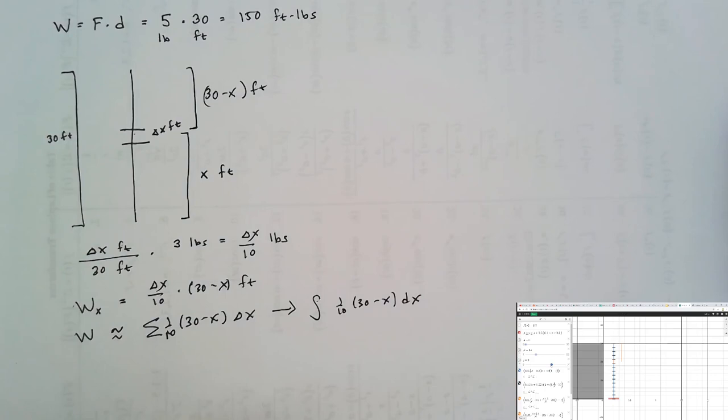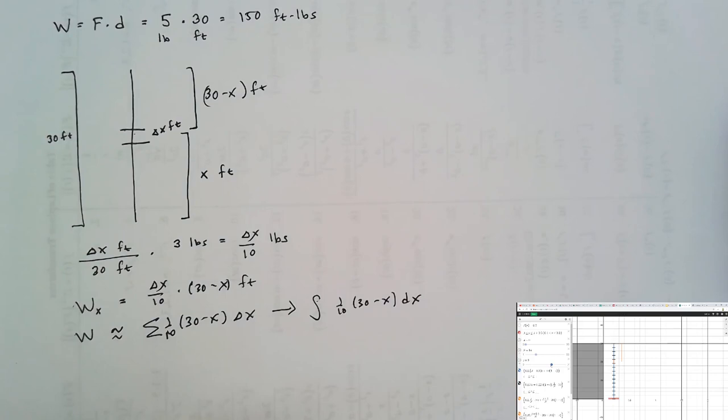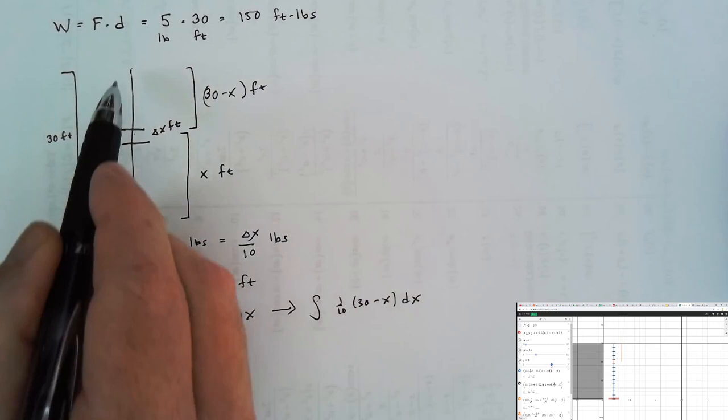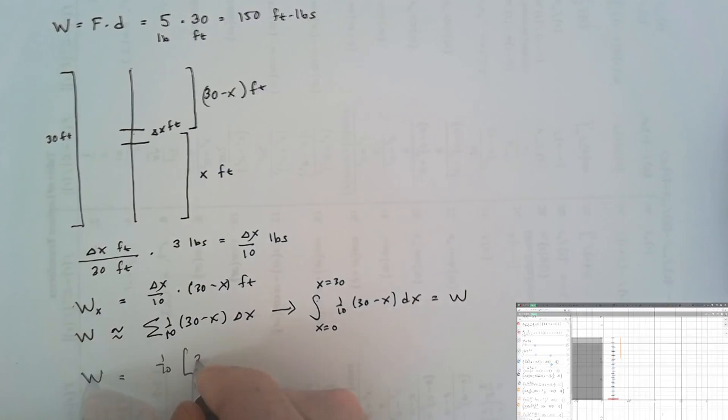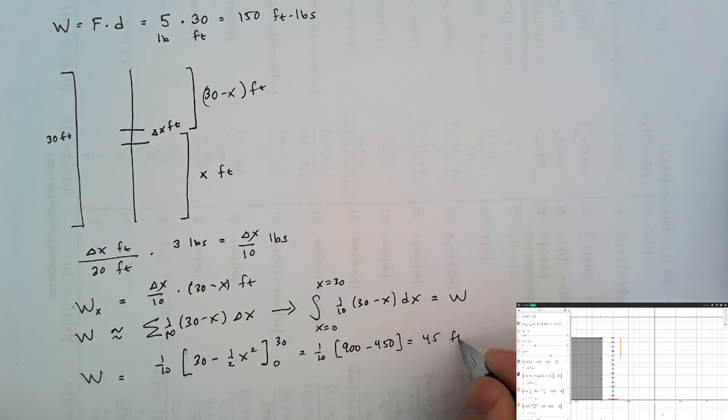The integral must have endpoints of x equals 0 to x equals 30 to get every single piece of the rope, and now we can compute the total work done on the rope, which will be 45 foot-pounds.